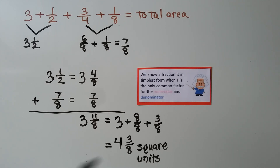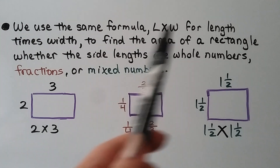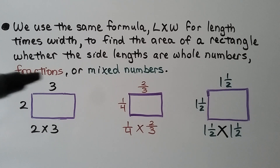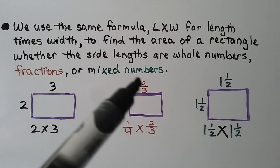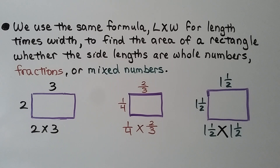Make sure you put your fraction in simplest form — it's in simplest form when one is the only common factor for the numerator and denominator. We use the same formula, length times width — L times W — to find the area of a rectangle whether the side lengths are whole numbers, fractions, or mixed numbers. If they're whole numbers, we do two times three. If they're fractions, we do one fourth times two thirds. If they're mixed numbers, we do one and a half times one and a half. We'll get the area for the rectangle.